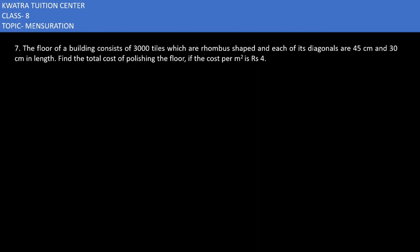Let's start with the 7th question. It says the floor of a building consists of 3000 tiles which are rhombus shaped, and each of its diagonals are 45 centimeters and 30 centimeters in length. Find the total cost of polishing the floor if the cost per meter square is rupees 4. So what have you given here?